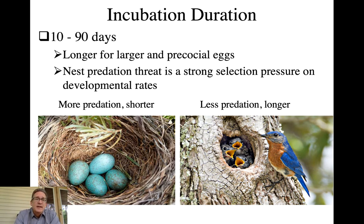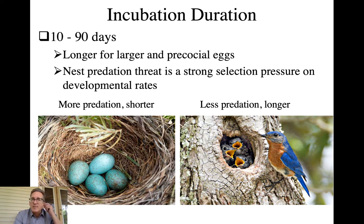How long does incubation take? It can be as short as 10 days in some small passerines — brown-headed cowbirds fit that category with incredibly fast development. Larger birds take longer, up to about three months, particularly with larger precocial eggs since those young need to be developmentally advanced when they hatch. If you hatch in 10 days, you're going to be a very altricial, helpless, gummy nestling.